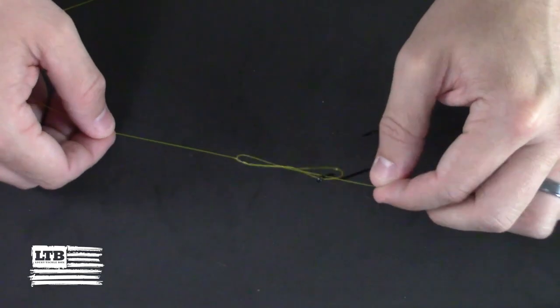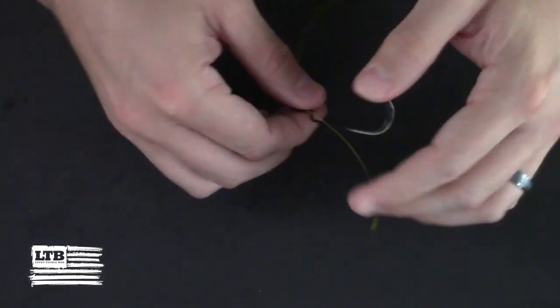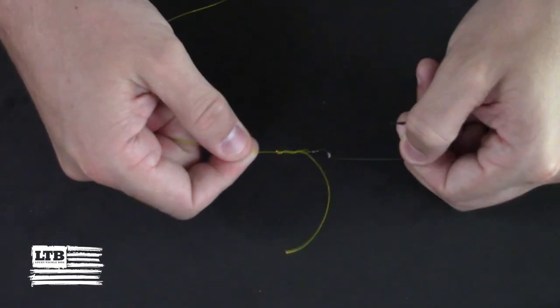Make sure to wet the knot and cinch it down as far as you can, providing no additional slip at the eye of the hook.